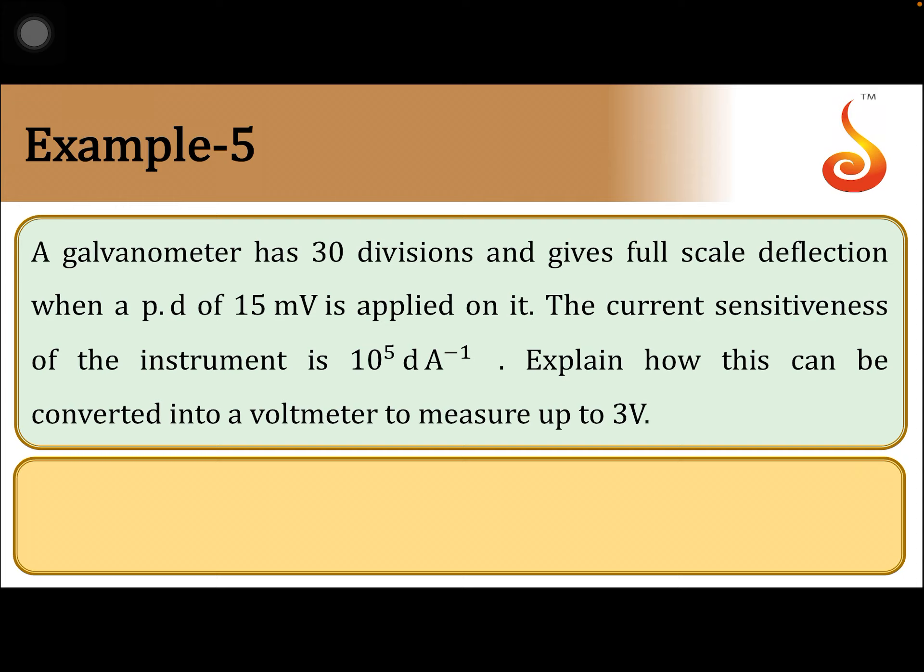Example 5. A galvanometer has 30 divisions and gives full-scale deflection when a potential difference of 15 millivolt is applied on it. Current sensitiveness of the instrument is 10 to the power 5 division per ampere. Explain how this can be converted into a voltmeter to measure up to 3 volt.